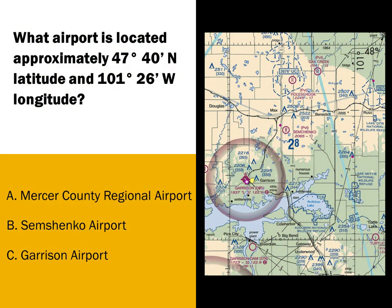Here's an actual question from the FAA practice test: What airport is located approximately 47 degrees, 40 minutes north latitude, and 101 degrees, 26 minutes west longitude? The correct answer is the Garrison Airport. You find that by counting over from the 101-degree line 26 minutes, or you can count backwards from the 101-degree, 30-minute line. Then you count either backwards from the 48-degree line down, or count up from the 47-degree, 30-minute line.